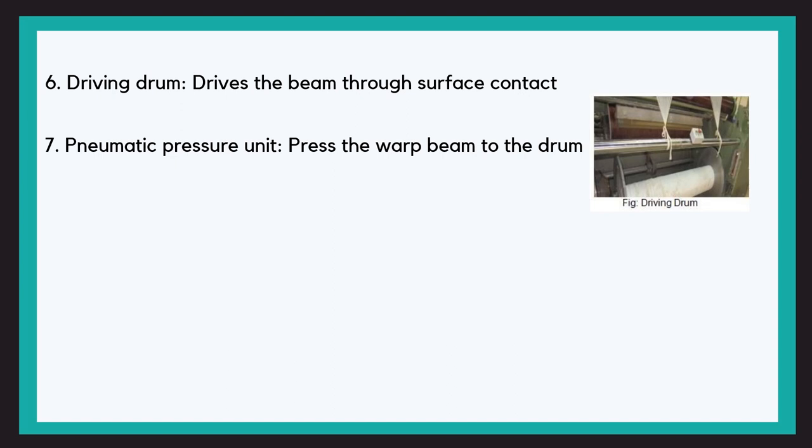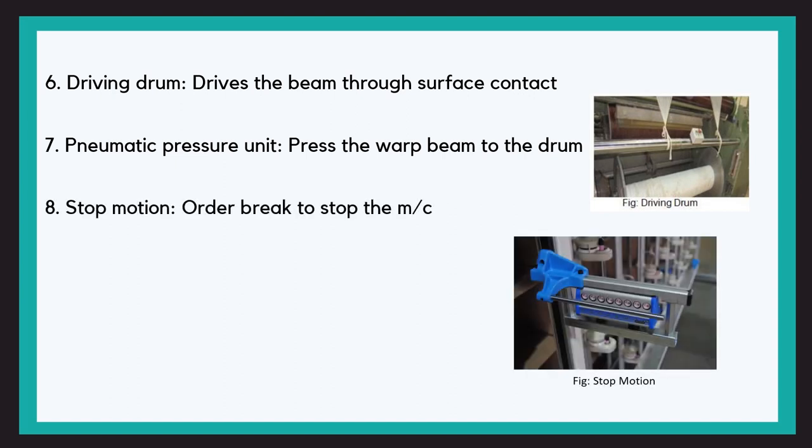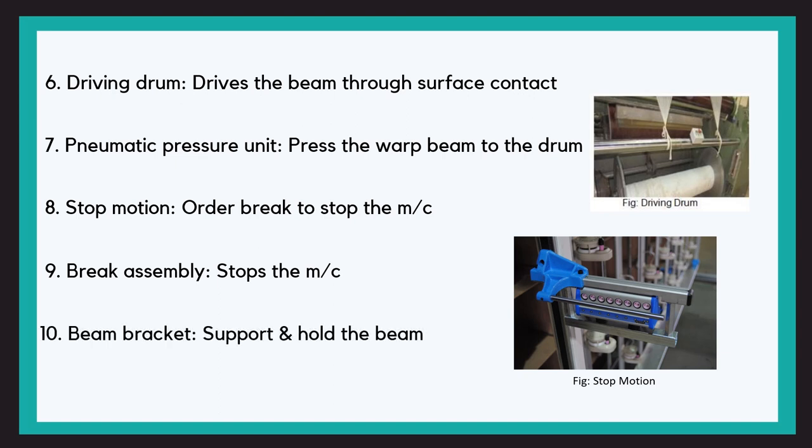If there is a breakage or the required amount of yarn is wound on the beam, the stop motion senses it and orders the brake to stop the machine. The brake assembly stops the machine. And lastly, the beam bracket supports and holds the beam.